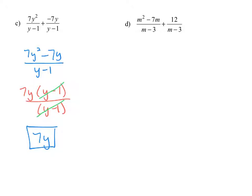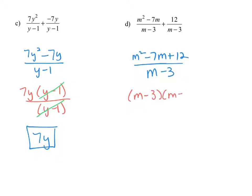In example D, we can add these two fractions together because we have the same denominator. In the numerator we have m squared minus 7m plus 12, and in the denominator we keep the common denominator of m minus 3. We can simplify the numerator by factoring: m squared minus 7m plus 12 factors into m minus 3 and m minus 4, since the factors of 12 that add up to negative 7 are negative 3 and negative 4. We divide out the common factor, and our final answer is m minus 4.